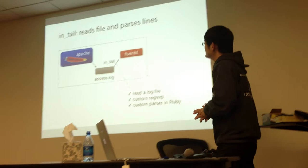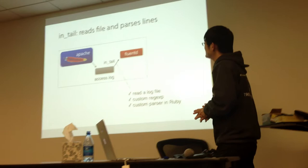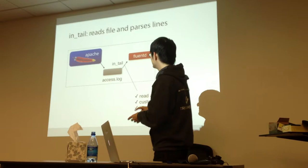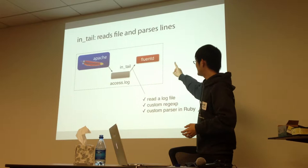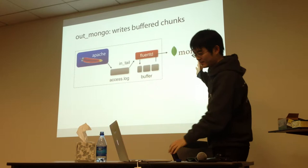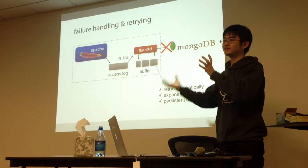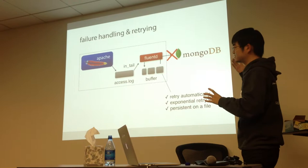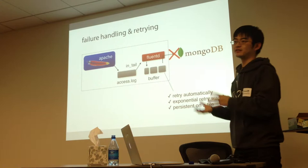Here is a short example. In this case, Fluentd uses an input plugin named 'in_tail', which is like the Unix 'tail -f' command — it reads data from a log file. The input plugin parses that data and converts it into JSON. Fluentd writes logs into another data store. Fluentd first logs into a local buffer, and if the destination is down, Fluentd keeps the logs in local storage. When the destination server recovers, Fluentd automatically retries to store them. So it's reliable.